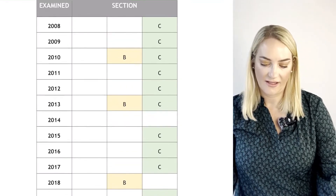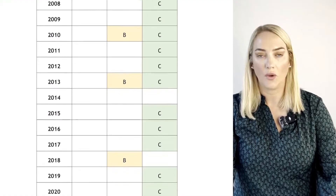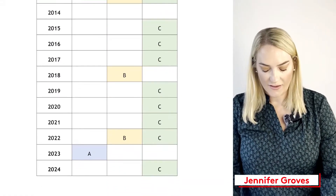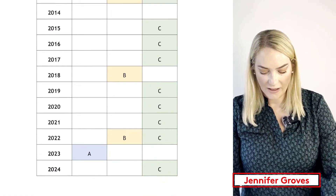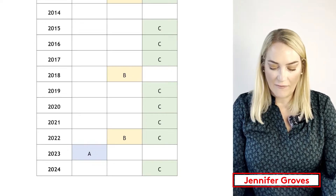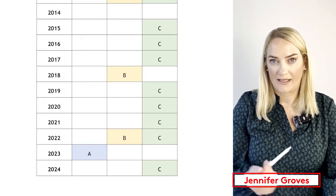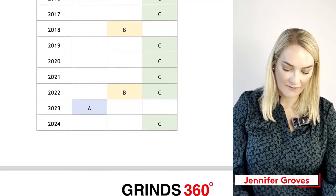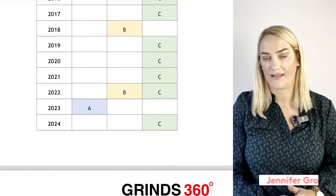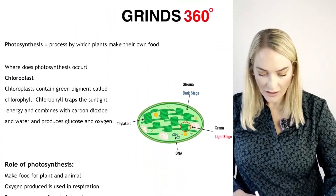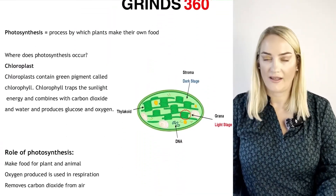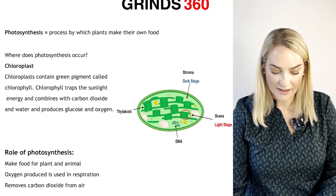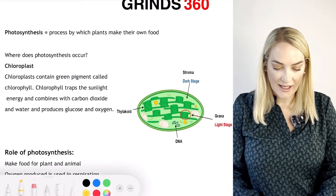Looking here, you can see photosynthesis comes up an awful lot in Section C. It did come up in 2024, and it can come up in the experiments part in Section B, and less frequently in Section A. So let's start now with photosynthesis — what is it?